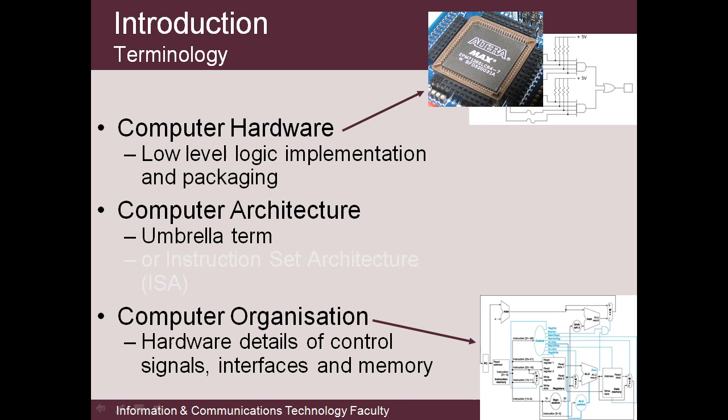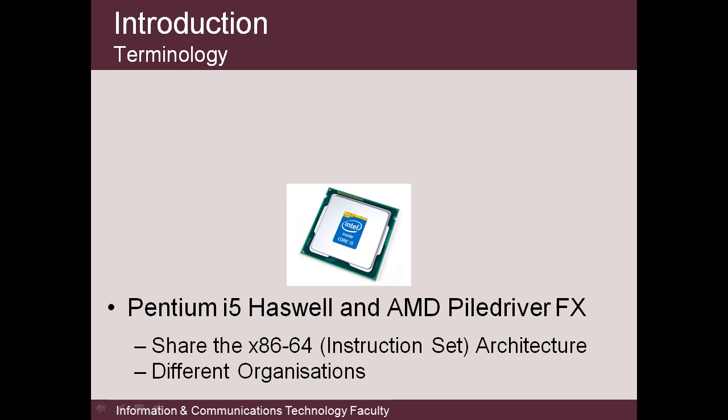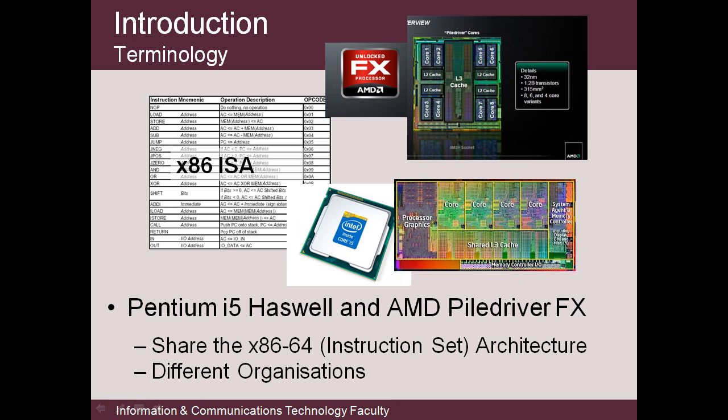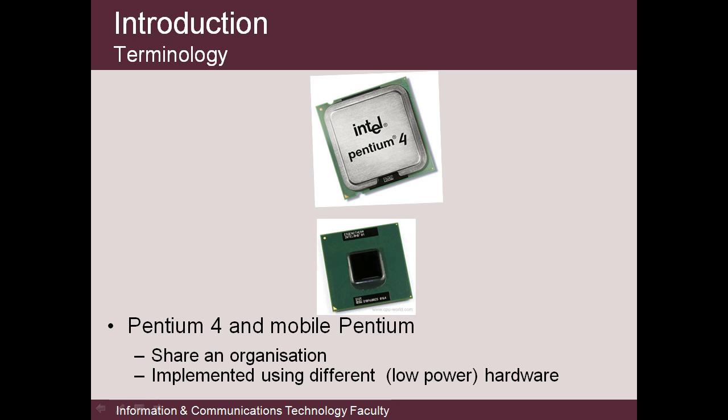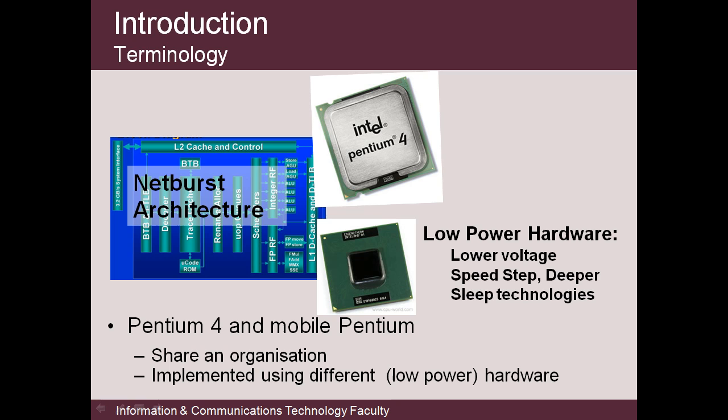Computer architecture, however, is sometimes also used, mainly by programmers, to refer to the instruction set — just the bits of the machine programmers have to know about. For example, by the Hennessy interpretation, the Intel Pentium and AMD processors are two computers with different internal structures, that is, with different organizations, that run the same software — they share a common x86 instruction set architecture. The Pentium desktop and mobile Pentium chips share a structure or computer organization, but implement it with different hardware, with different power, clock rates, and memory systems, as appropriate for the desktop or mobile environment.